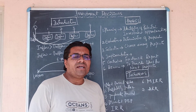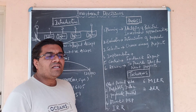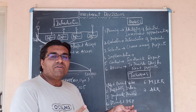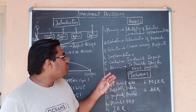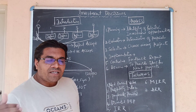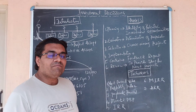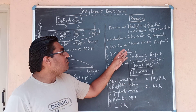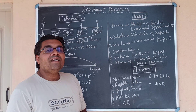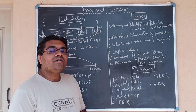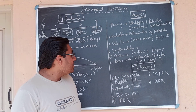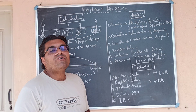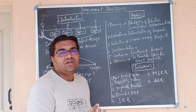We need to collect feedback reports, compare and review the results — that is the project completion stage. The techniques include net present value, profitability index, payback period, discounted payback period, internal rate of return, modified internal rate of return, and accounting rate of return.